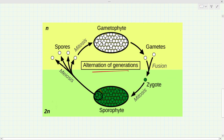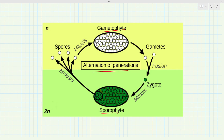As mentioned earlier, in the haplodiplontic life cycle both gametophyte and sporophyte are multi-cell structures. One thing to understand clearly: in the case of mitosis, the ploidy level remains the same — a diploid structure remains diploid and a haploid structure remains haploid. But in the case of meiosis, the ploidy level becomes half.